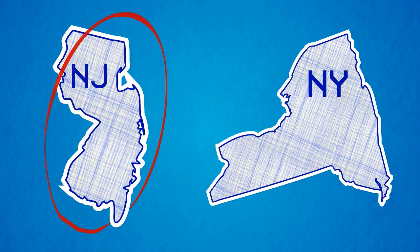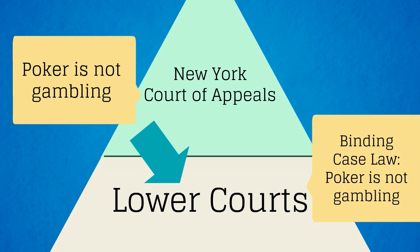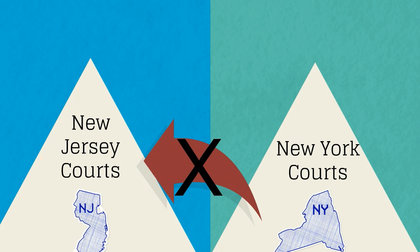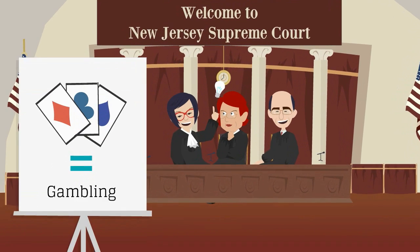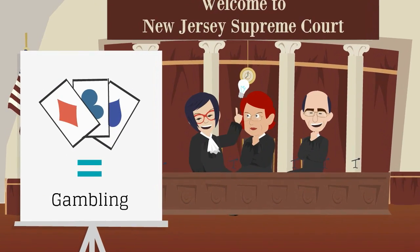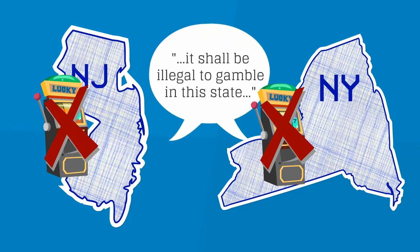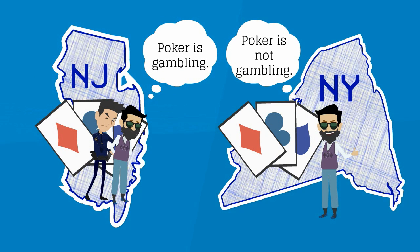But New Jersey is a different state — it's a different jurisdiction. The decision by New York's Court of Appeals is binding on courts in New York, but it's not binding case law on courts in New Jersey. New Jersey courts are free to define poker as gambling. So in our example, we have two states with the same statute, but binding case law in each state is very different.